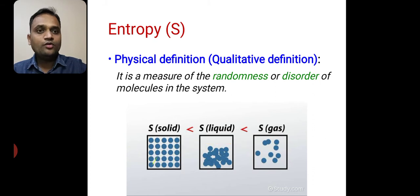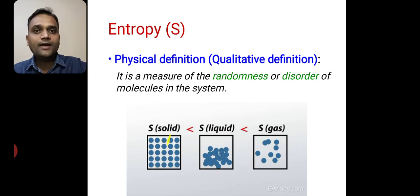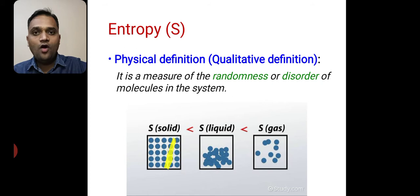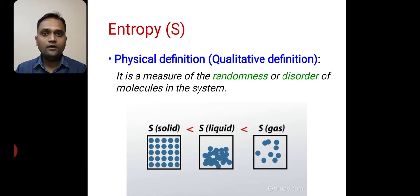This figure shows a solid, then a liquid, and a gas. When we consider a solid form, it is a highly ordered system. When we consider liquid form, it is a less ordered system. While when we see the gaseous form, it is the least ordered or highly disordered system.